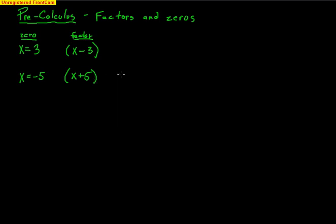Why? Because negative 5 plus 5 is zero. But we talked about other ways you could write this factor. I could put any value out in front of these parentheses and distribute through. For example, if I put a 7 there and distributed, I'd get 7x minus 21 — and that would still be a factor, because 7 times 3 is 21, and 21 minus 21 is zero.